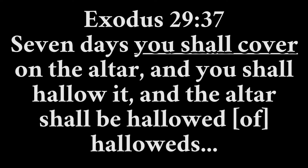Exodus 29:37 — 'seven days you shall cover on the altar, and you shall hallow it, and the altar shall be hallowed of hallowed's.' Whenever the priesthood is being initiated and the tent of meeting, the tabernacle, is being established, offerings are performed to cover on the altar. This is the word normally translated as atonement — 'you shall atone on the altar.' The altar is being atoned on, the altar is being made holy. But does this mean that Aaron the priest is becoming at one with the altar, or is the altar being covered over?